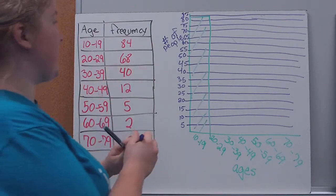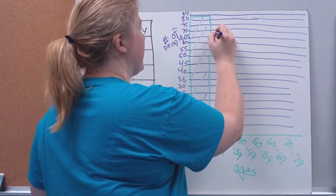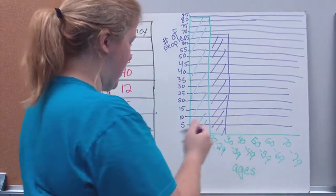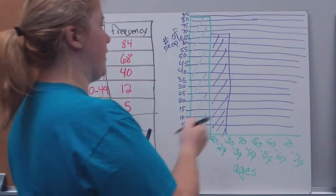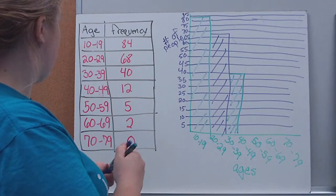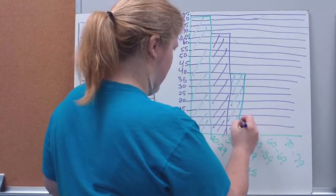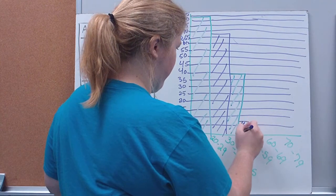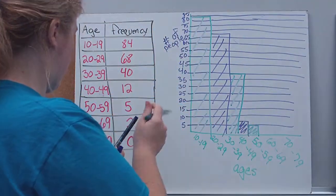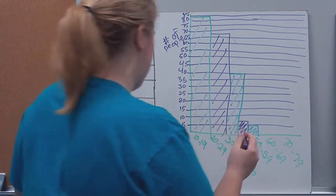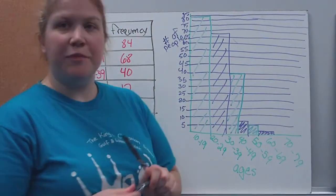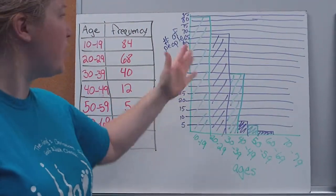Our next age range, 20 to 29, there was 68. So again, just come up, find on your graph where it's 68. Shade that in. 30 to 39, there were 40. So again, just come up, find where 40 is, make your bar. 40 to 49 was 12. About here. 50 to 59 was 5. 60 to 69 was 2. And there were none for the last one. So we just draw our bars in there like that. You'll notice they're all touching. We've shaded them in.